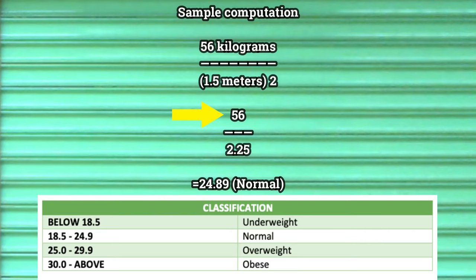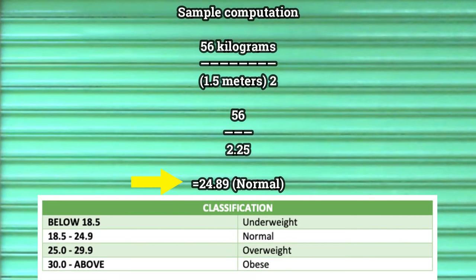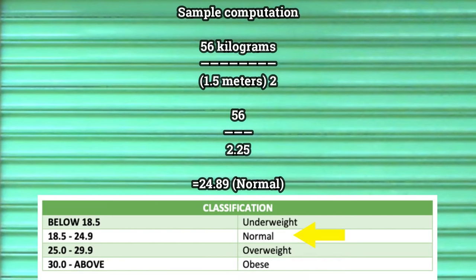Then, 56 divided by 2.25 equals 24.89. Based on the table, your BMI is normal.